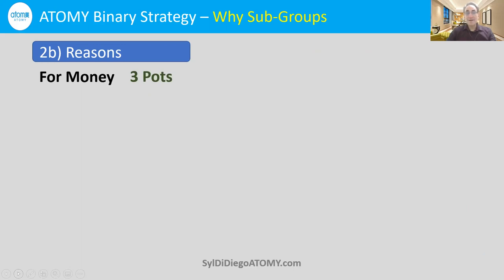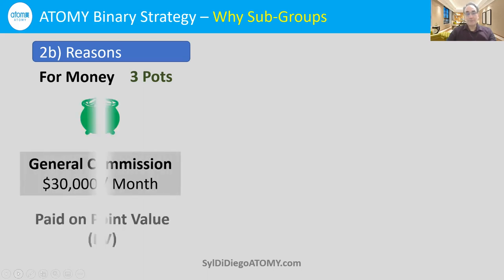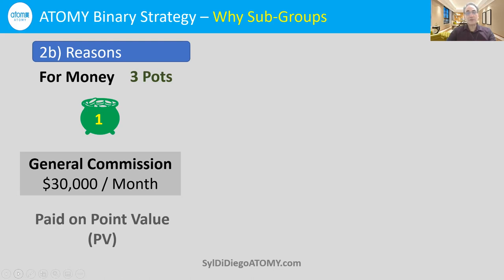Another big reason is that the three pots of money are best used when you have subgroups. One pot of money is our general commission — we can make up to $30,000 a month of general commission. This is based only on point values. Theoretically, you could have many, many consumers, especially since we have unlimited levels of accumulated PV, and you could make $30,000 a month. That's the maximum for general commission.